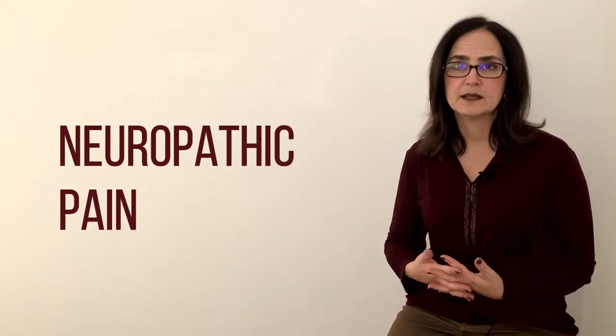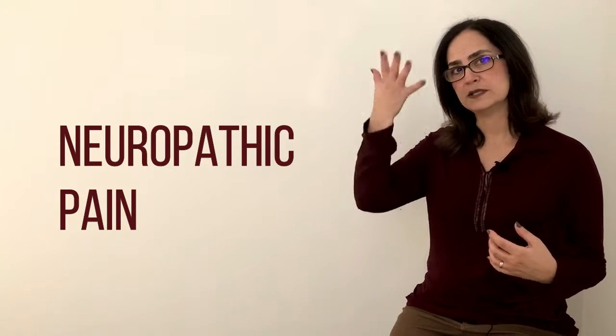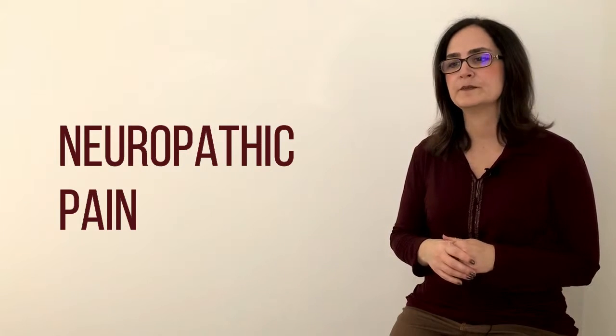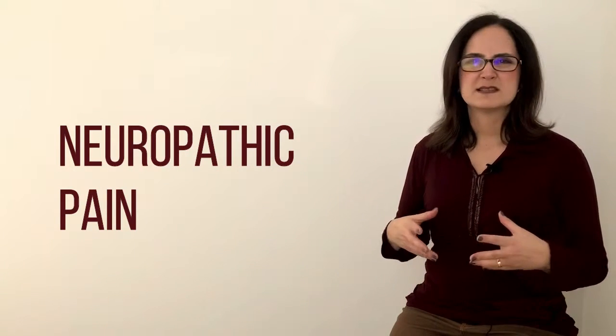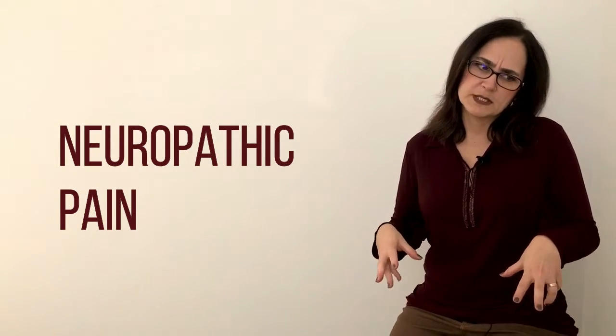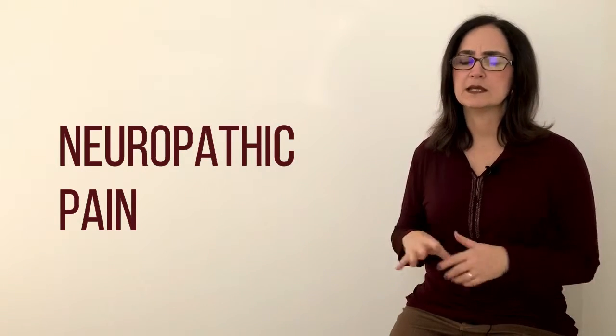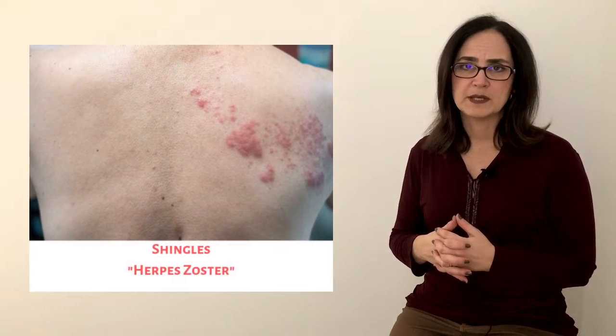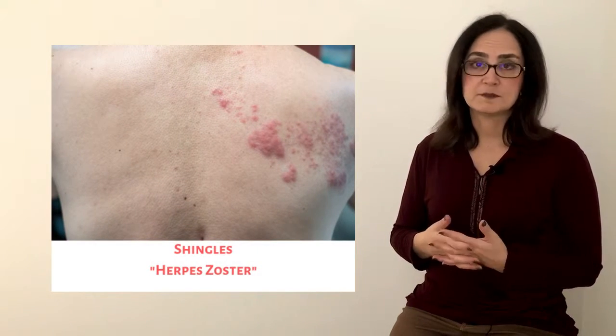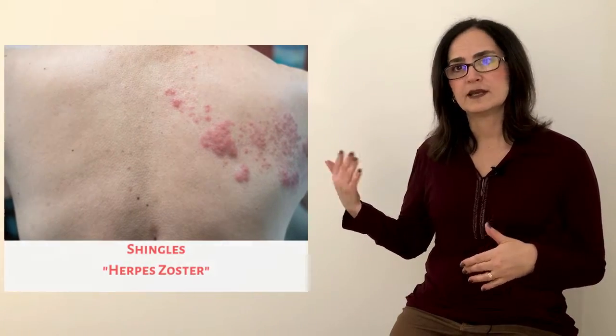Another type of disease that causes chronic pain is what we call neuropathic pain. This means there is a lesion in the nerve system — either the central or the peripheral nervous system. Neuropathic pain is a different type of pain: it presents as electrical shocks, burning, numbness, or stabbing pain. Examples include shingles (herpes zoster), central post-stroke pain in people who have had a stroke, or diabetic neuropathy in people with diabetes. There are many different types of neuropathic pain.